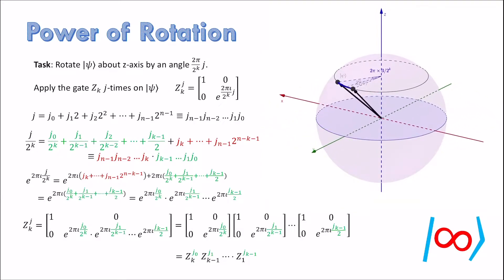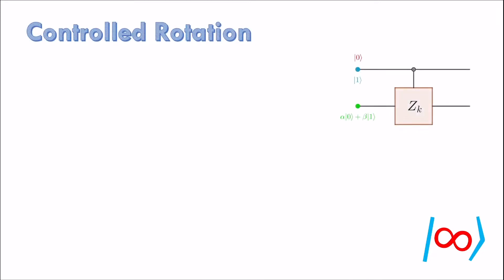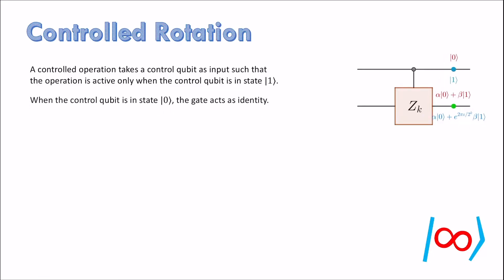When some bit is 0, then the corresponding factor is identity, that is, it does no rotation. This means we need to implement controlled version of Z_k gates. A controlled operation takes a control qubit as input such that the operation is active only when the control qubit is in state 1. When the control qubit is in state 0, the gate acts as identity.